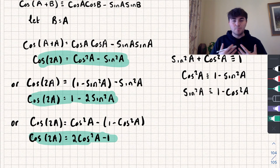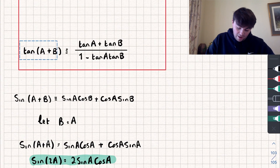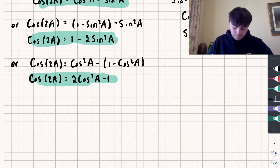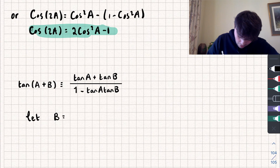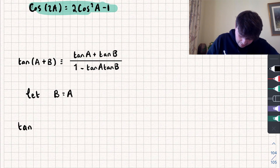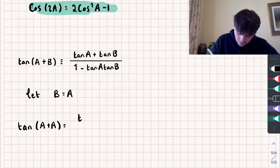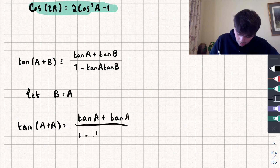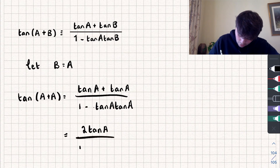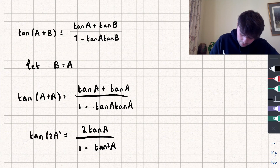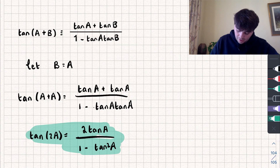The final one is tan of 2a. Bringing down the tan addition formula and again letting b equal a, we get tan of a plus a equals tan a plus tan a all divided by 1 minus tan a times tan a. Simplifying, this gives 2 tan a divided by 1 minus tan squared a, which equals tan of 2a. And that is the final double angle formula.